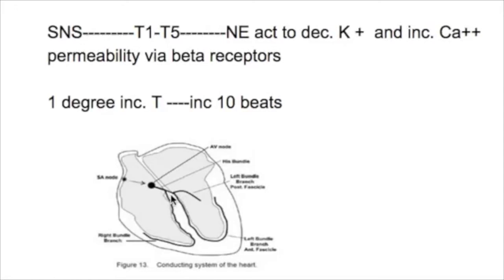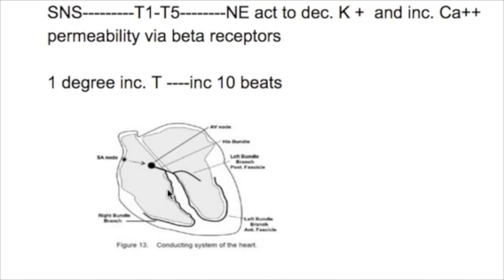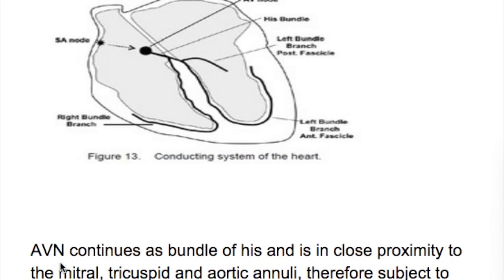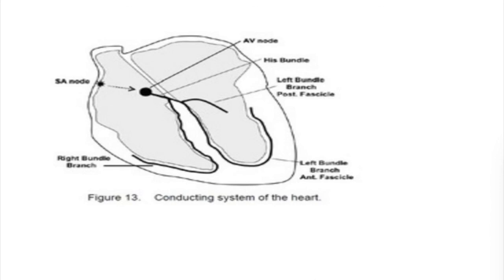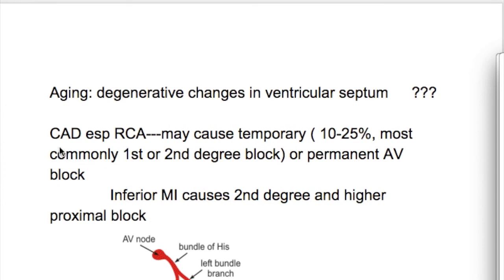The impulse delays at the AV node because the size of the node is small and there are fewer gap junctions. This delay serves to allow ventricular filling to complete. The AV node is prone to injury because it continues as the bundle of His and is in close proximity to the mitral, tricuspid, and aortic annuli.